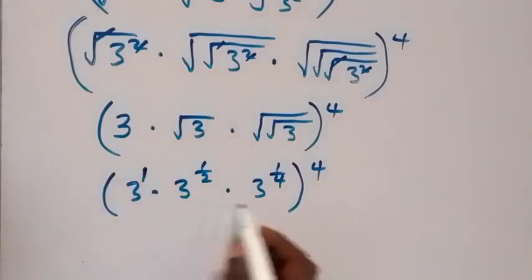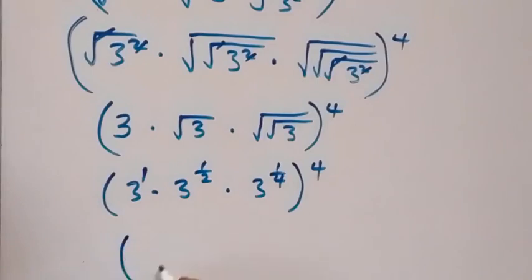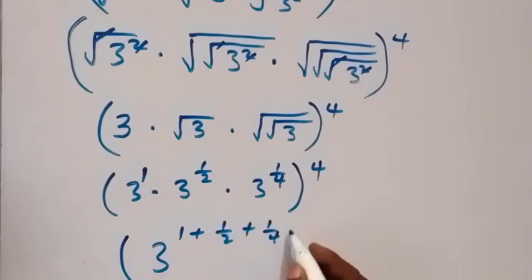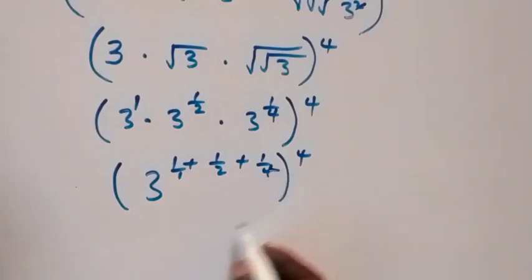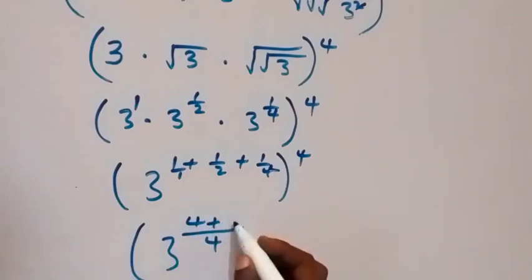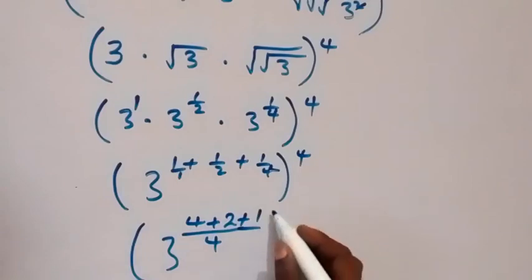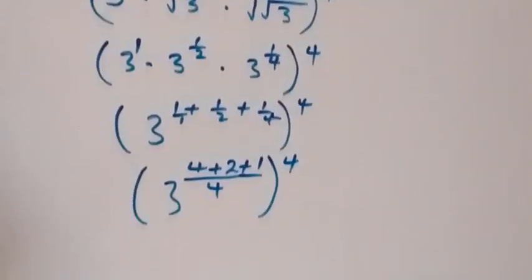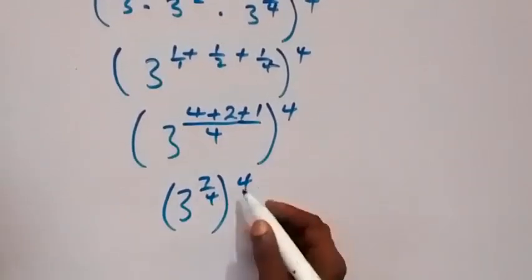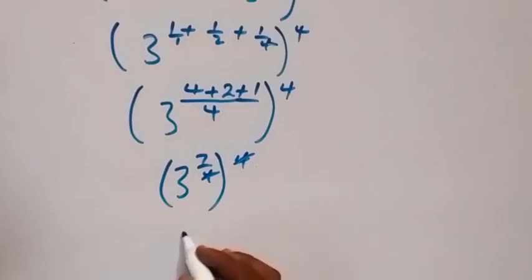This is 3 raised to power 1. Since we have the same base and they are multiplying, we can add the powers: 1 plus one-half plus one-quarter, raised to power 4. The LCM is 4, so we have 3 raised to the power of 4 over 4 plus 2 over 4 plus 1 over 4, raised to power 4. This gives us 3 raised to power 7 over 4, which is raised to power 4. This power multiplies, the 4 cancels, and we remain with 3 raised to power 7.